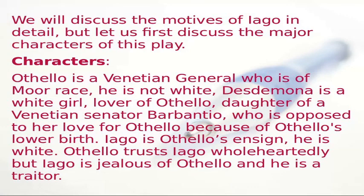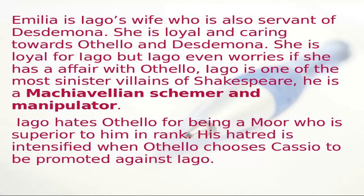Emilia is Iago's wife and also servant of Desdemona. She is loyal and caring towards Othello and Desdemona. She is loyal to Iago, but Iago even suspects she may have an affair with Othello. Iago is one of the most sinister villains of Shakespeare — a Machiavellian schemer and manipulator.